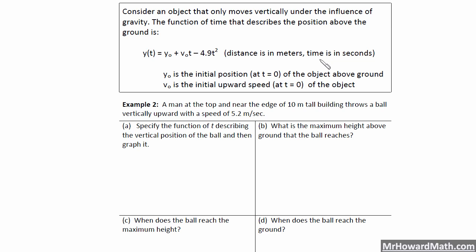Distance is in meters and time is in seconds. y₀ is the initial position at time zero of the object above the ground — how high above the ground are you letting it go from. v₀ is the initial upward speed: when you let it go initially at time zero, how fast is it going when you first release it? We are throwing this object straight up and it's coming straight back down.